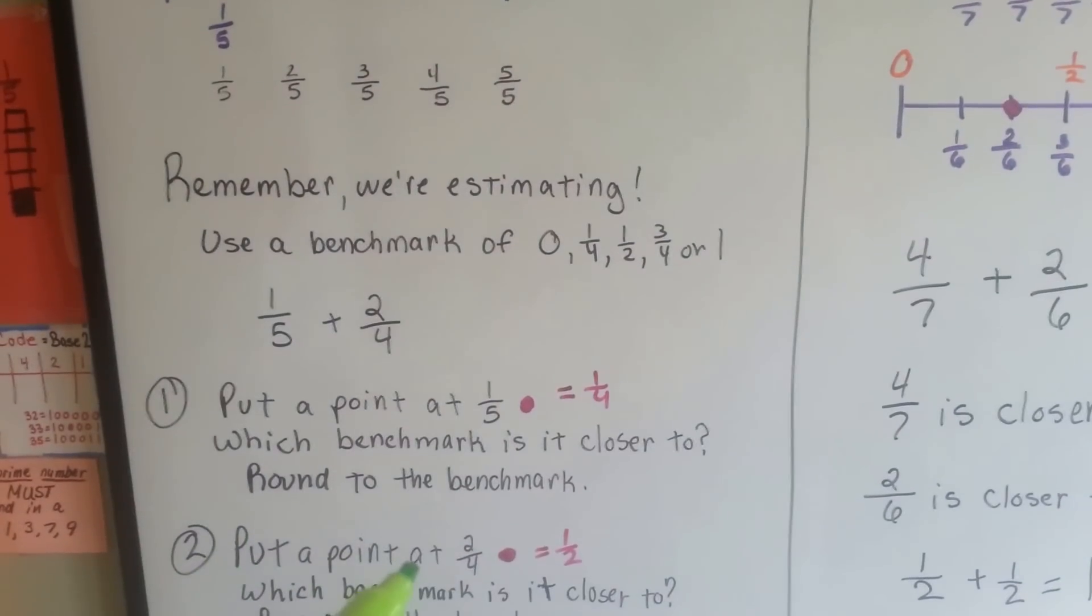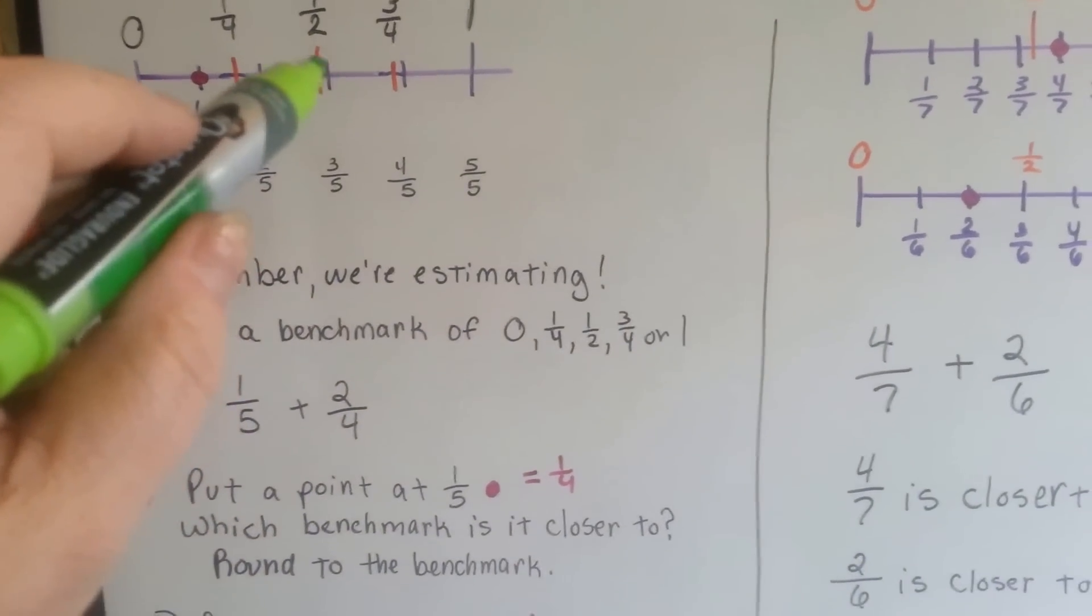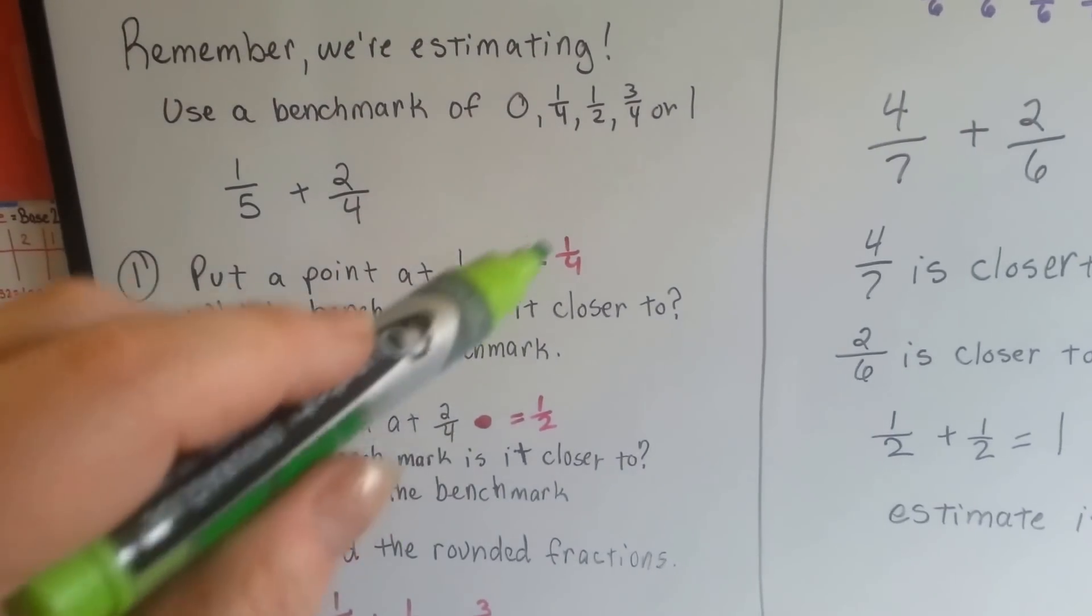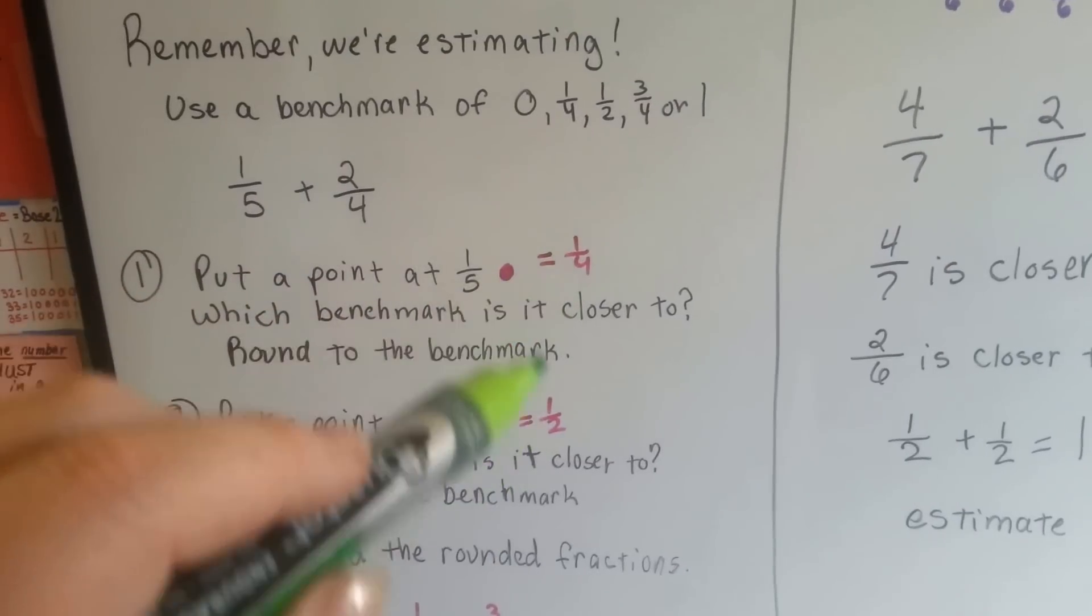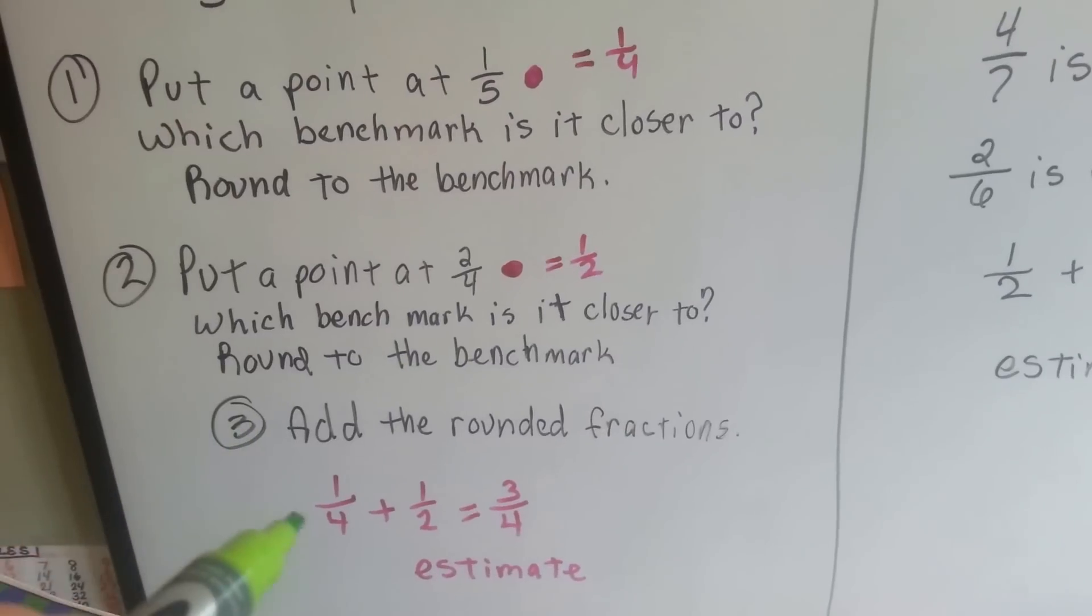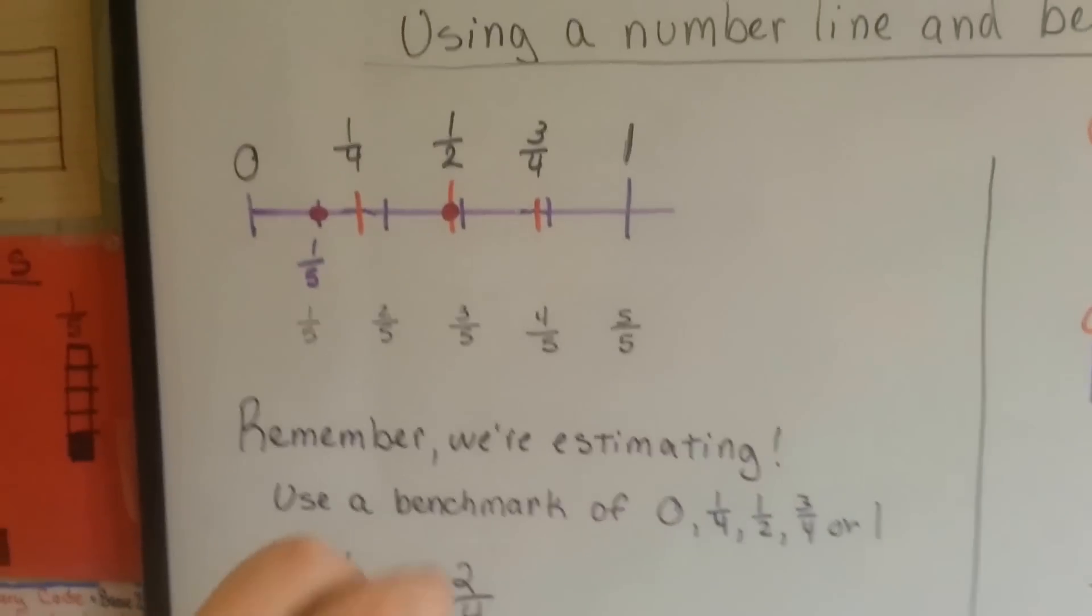We put a point at the 2 fourths, which is a half, and it places us right there. Then we know that we've got 1 half and 1 fourth as our rounded fractions. All we have to do is look at the number line to add them to see that they're 3 fourths, so our estimate would be 3 fourths.